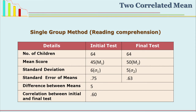Let us see one example. The researcher is interested in improving reading comprehension of a group of children. The same group is given an initial test and a final test. There are 64 children, so the number for initial test and final test is the same: 64. The mean score for initial test was 45 and for final test was 50. Standard deviation of initial test is 6, standard deviation of final test is 5. Standard error of initial test is 0.75 and standard error of final test is 0.63.